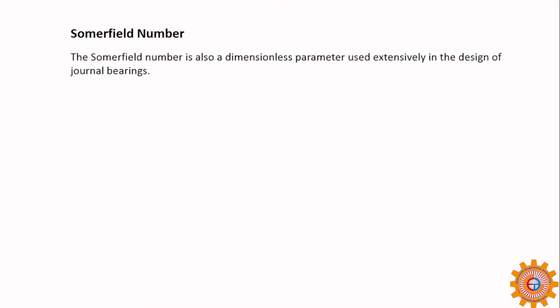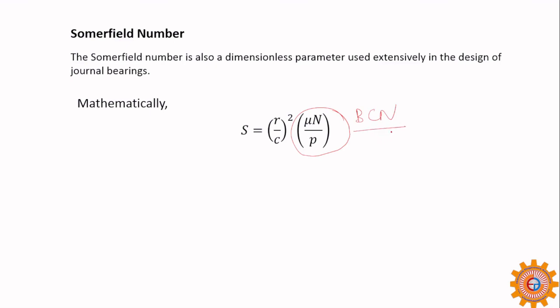Next is the Sommerfeld number, which is a very important dimensionless parameter in the design of journal bearings. Mathematically, the Sommerfeld number equals (radius of journal / radial clearance)² × BCN. For design purposes, its value is taken as 14.3 × 10⁶, and from this you can find out any remaining unknown quantities.